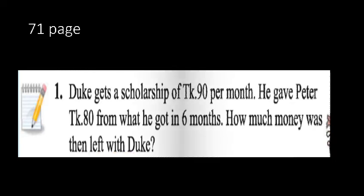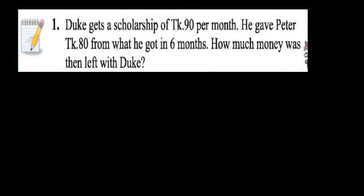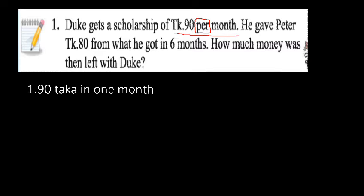Now I am going to explain it in detail. Number one: Duke gets a scholarship of 90 taka per month. Our first clue is 90 taka per month — meaning he gets 90 taka in one month. Our next clue is he gave Peter 80 taka from what he received in six months. So the giving amount is 80 taka.